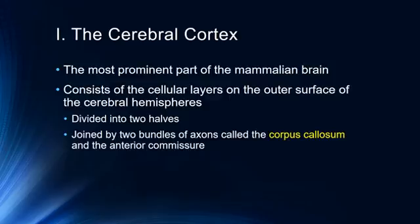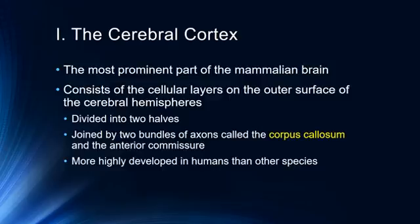As we learned in our last lecture, all of the information from the right side of the body is communicated to and from the left part of the cerebral cortex, and vice versa. Information between those two halves communicates with one another across the corpus callosum. The cerebral cortex is more highly developed in humans than in any other species, and this is really where the bulk of the processing in the brain occurs.